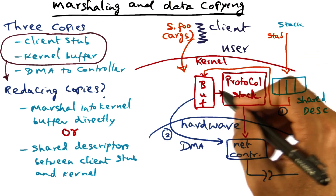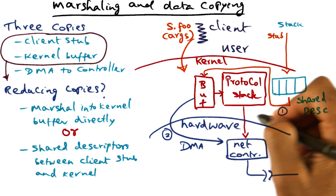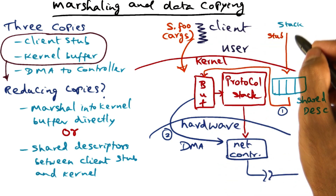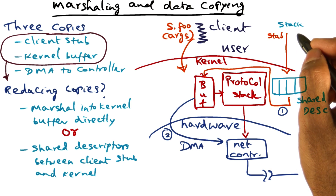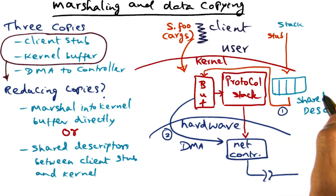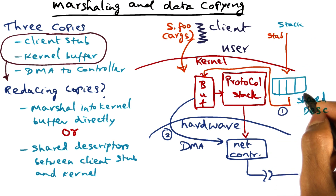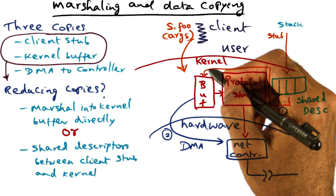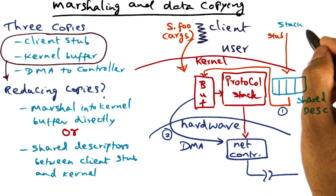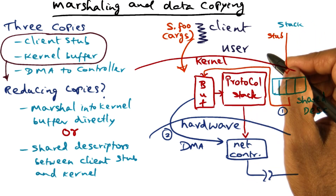Recall what I told you earlier: the kernel has no idea of the semantics of this call, and therefore it has no knowledge of the actual arguments or the data structures that are being used in the call. So what we're going to do is use the shared descriptor as a vehicle for the stub to communicate to the kernel the data structures that need to be passed.